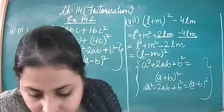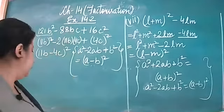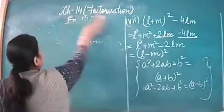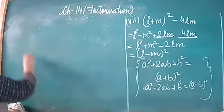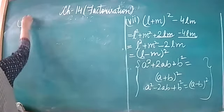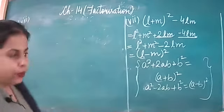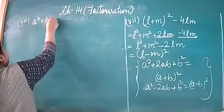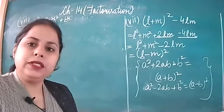Next is the 8th part. The question is a to the power 4 plus 2a squared b squared plus b to the power 4.